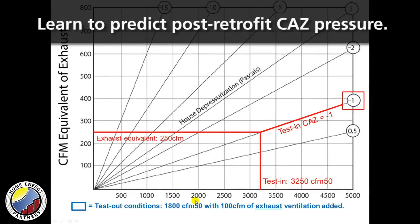We're going to add 100 CFM of exhaust ventilation. The first thing we do is we plot the 1,800, so there's our 1,800 line, so you can see that we're sliding to the left here.